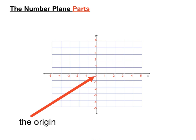And the origin is where the x and y axis meet each other. And the point, the coordinates of that origin are the point 0, 0. We'll talk about coordinates in a moment.